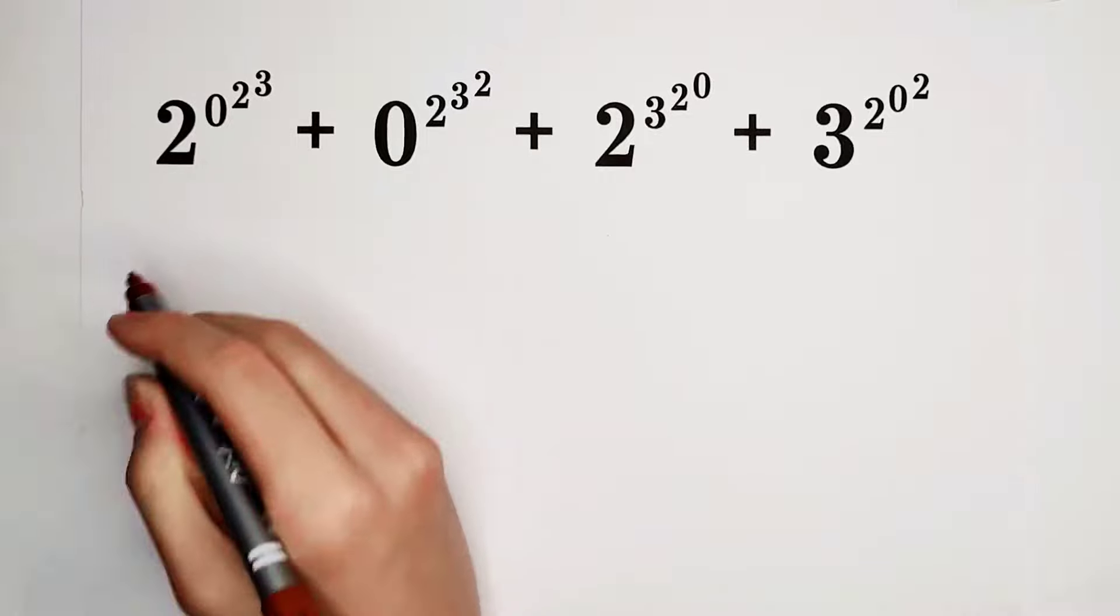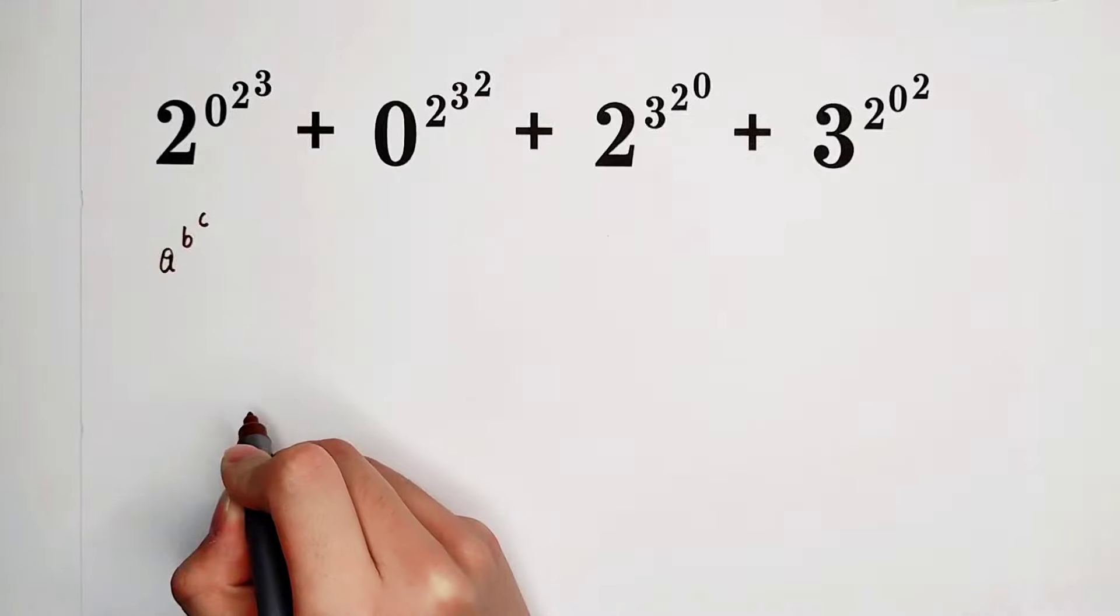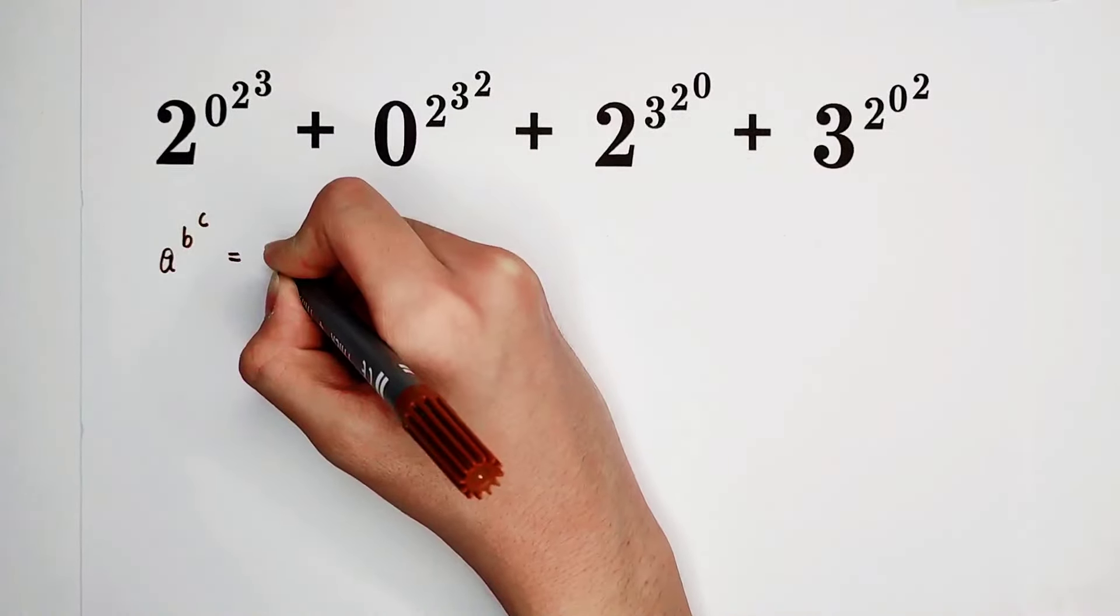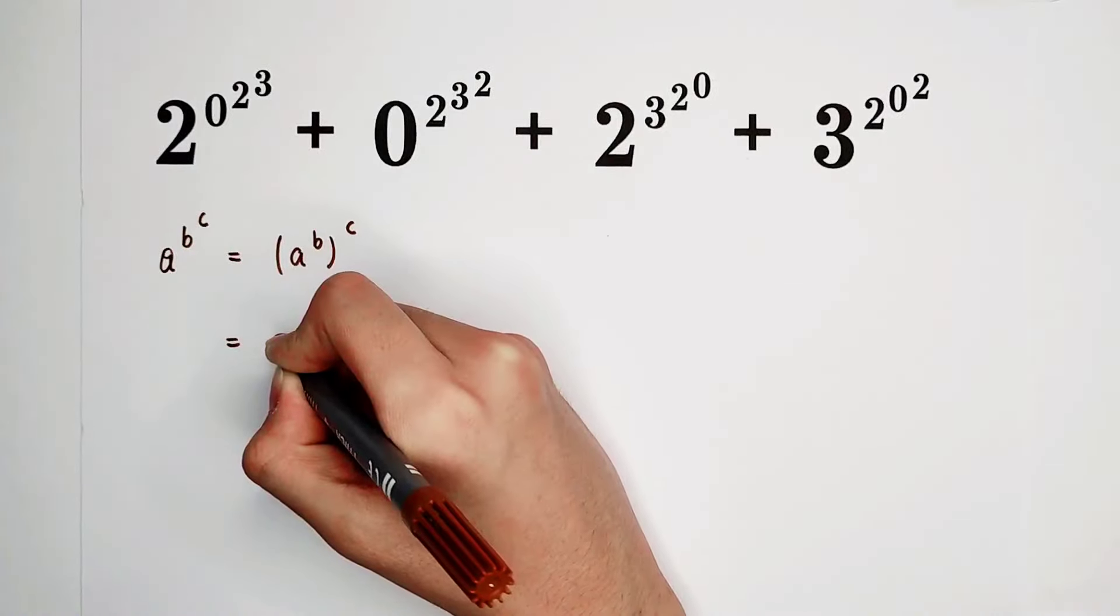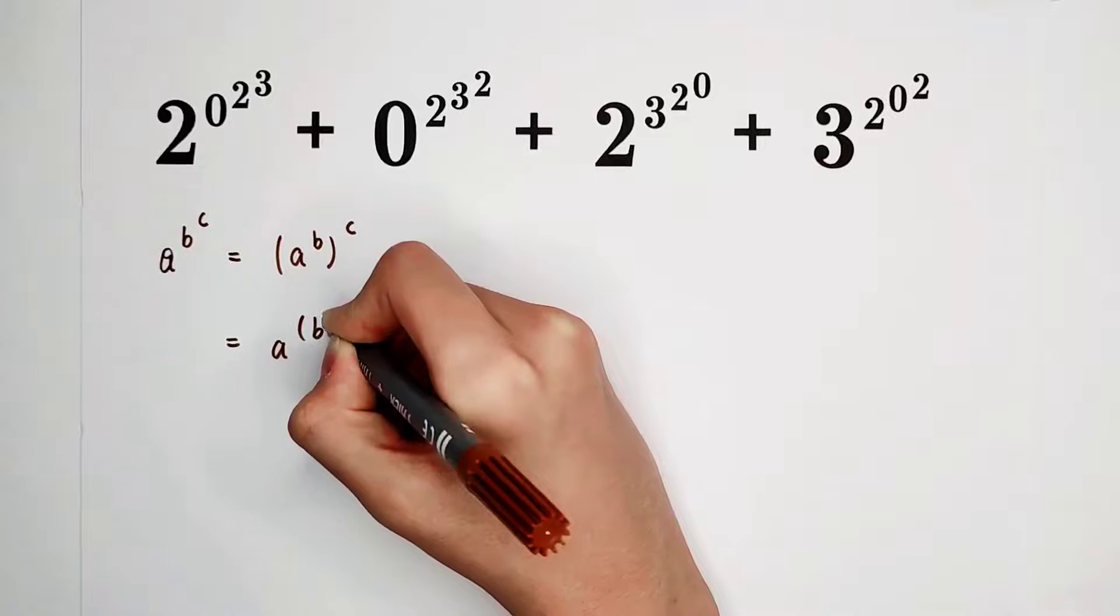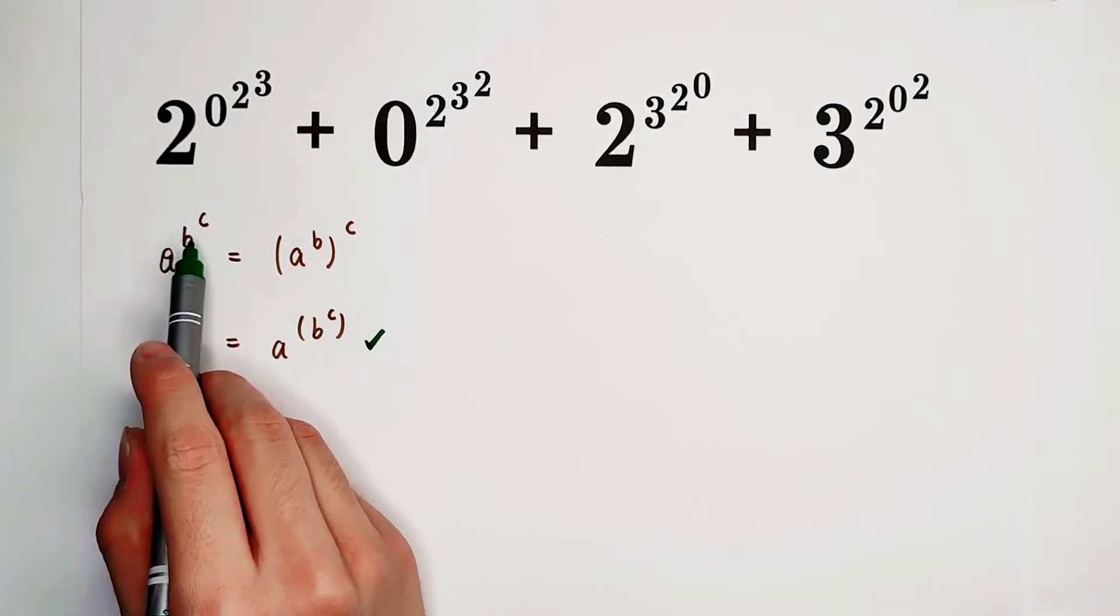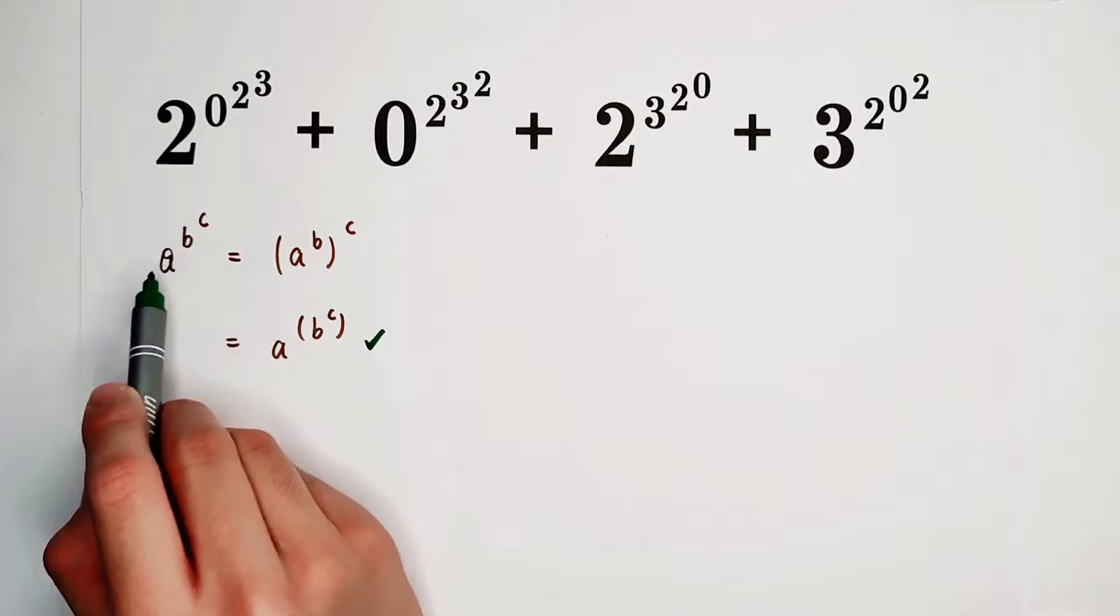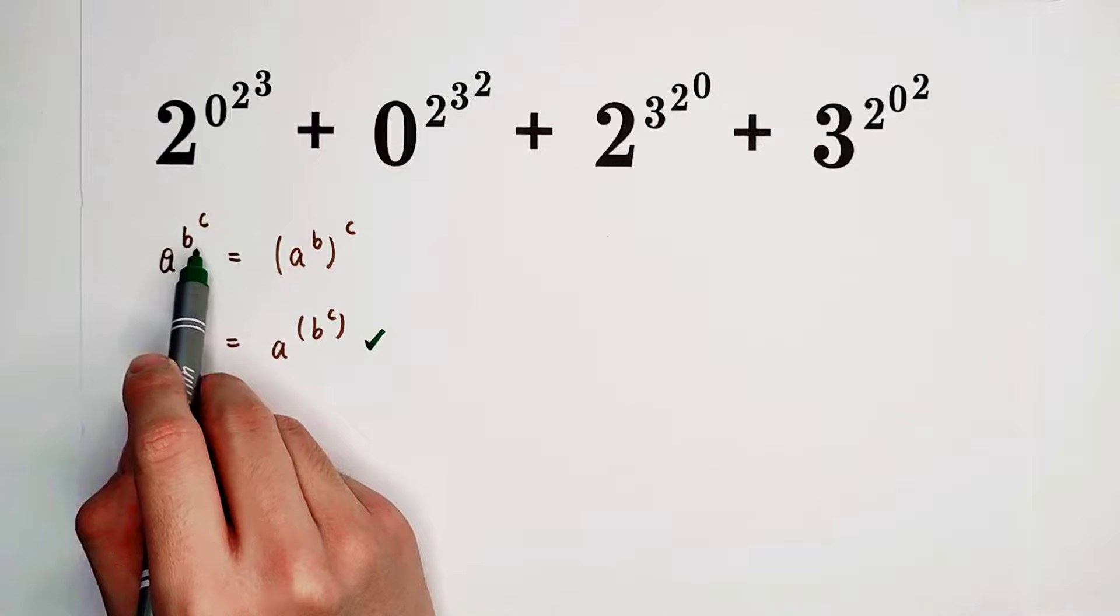Firstly, I have to tell you something about the calculation order. If you want to calculate a to the power of b to the power of c, we actually calculate from the top to the bottom. That means the exponent is the exponent. b to the power of c is the exponent. c is the exponent of b, and b to the power of c, these two guys all together, this part is the exponent of the base a.